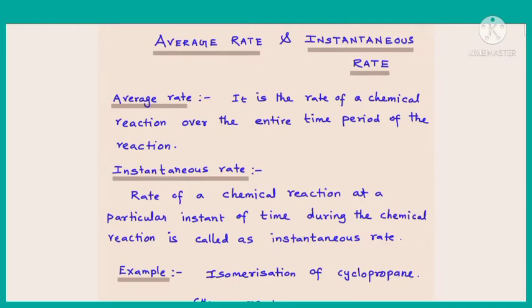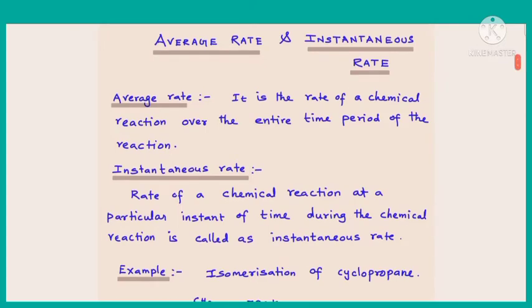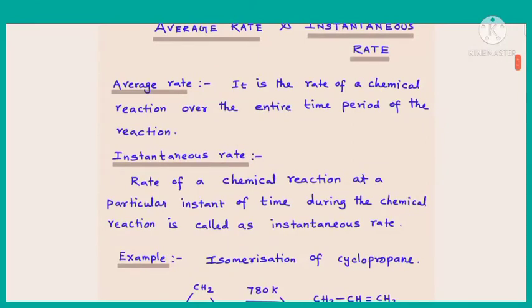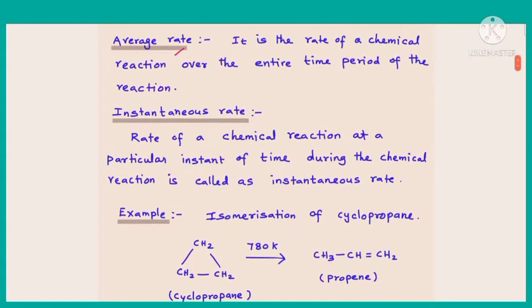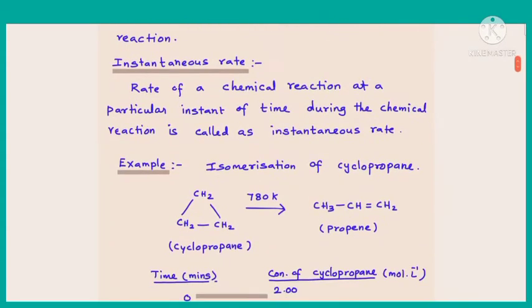Good morning. In this video I am going to discuss average rate and instantaneous rate — two different types of rates. Average rate is the rate of a chemical reaction over the entire time period of the reaction. Instantaneous rate is the rate of a chemical reaction at a particular instant of time, whether at 10 minutes, 20 minutes, 30 minutes, or any specific point.